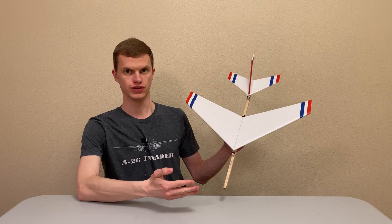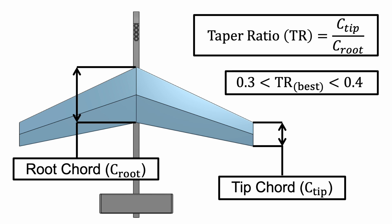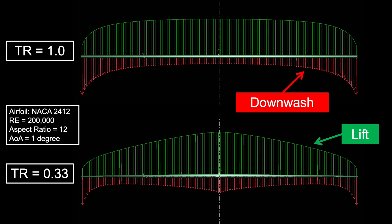A value of 1 indicates that the lift and downwash distributions perfectly match the ideal case and the wing is as efficient as it can possibly get. A value close to 0 indicates that the distributions are very far from ideal. One thing we can do to increase the span efficiency factor is to taper the wings so that the wingtip chord is shorter than the wing root chord. The taper ratio is calculated by dividing the tip chord by the root chord, and the ideal taper ratio for maximum efficiency is usually somewhere between 0.3 and 0.4. A tapered wing redistributes the downwash from the wingtips to the middle of the wing, resulting in a downwash and lift distribution that more closely resemble the ideal case.